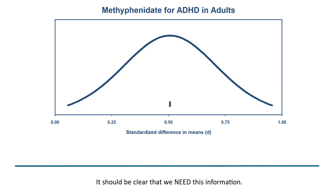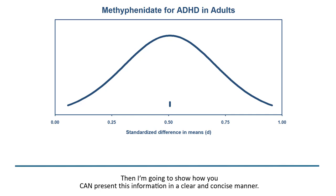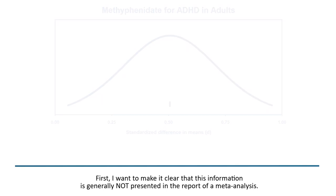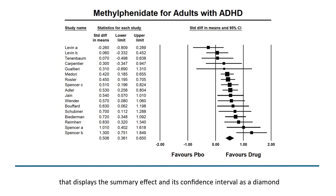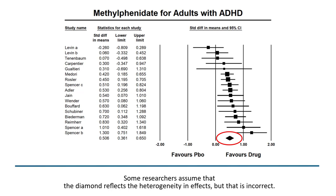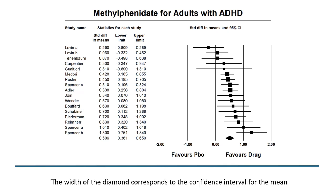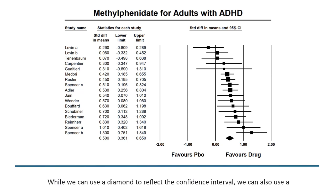It should be clear that we need this information. Most meta-analyses include a forest plot that displays the summary effect and its confidence interval as a diamond. Some researchers assume that this diamond reflects the heterogeneity in effects, but this is incorrect. The width of the diamond corresponds to the confidence interval for the mean — it tells us that the mean effect size falls in this interval.